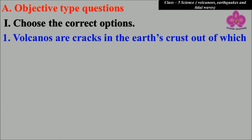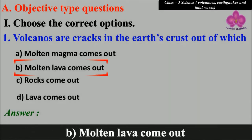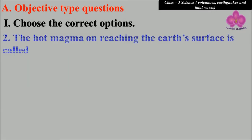out of which, look at the options: a) molten magma comes out, b) molten lava comes out, c) rocks comes out, and d) lava comes out. Answer: b) molten lava comes out. The hot magma on reaching the earth's surface